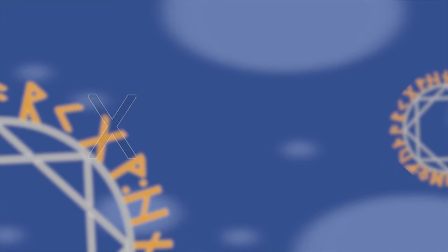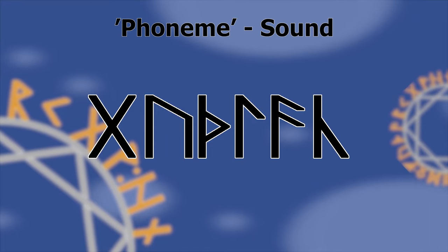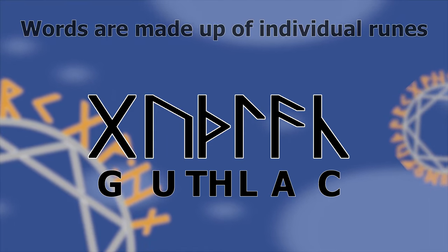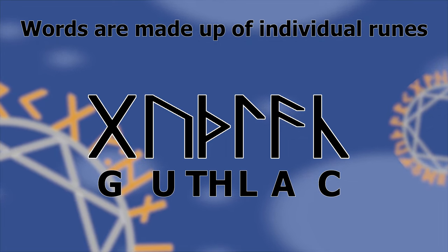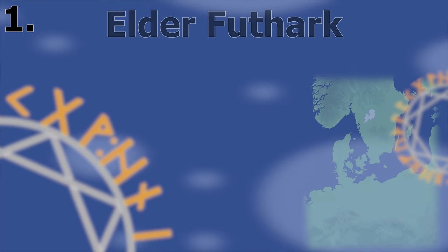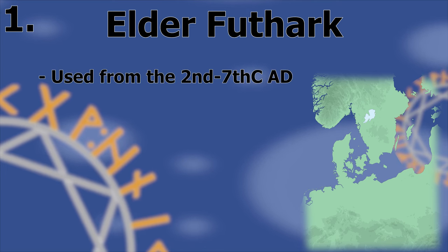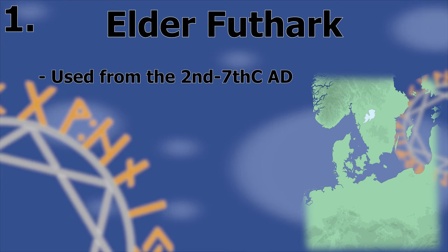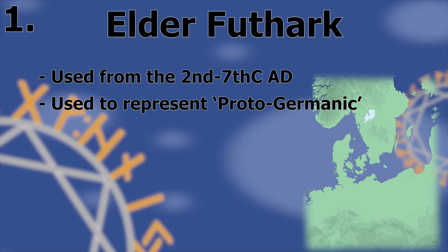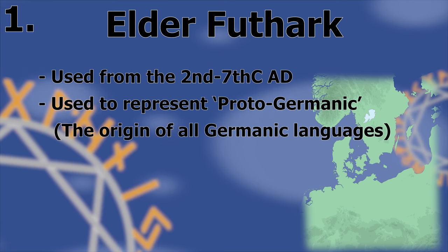Each individual rune of a runic alphabet corresponds to a phoneme or sound, so words are made up of individual runes. There are three known medieval runic alphabets. Firstly, there is the Elder Futhark. This is the alphabet which was used from the 2nd century until around the 7th century AD in continental Europe, used to represent a Proto-Germanic language — the language from which all Germanic languages stem.